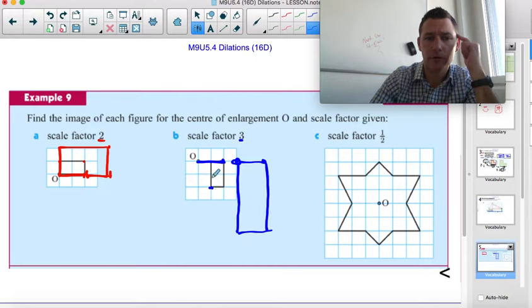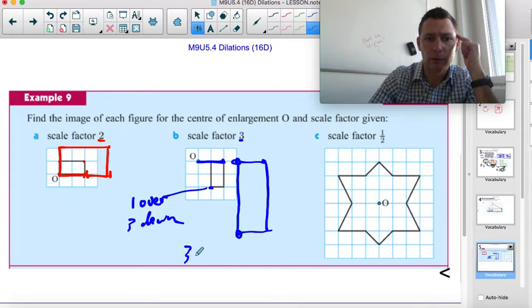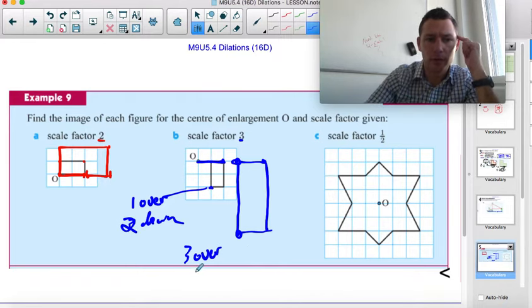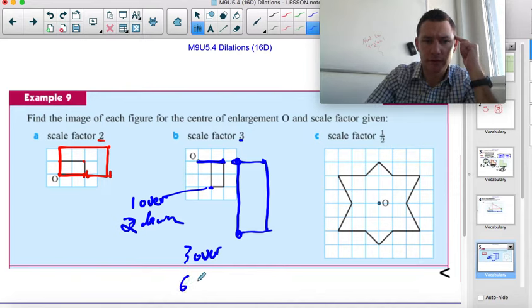Cool. So this point was 1 over, 2 down. This corresponding point should be 3 over, and 2 times 3 is 6, so 6 down.